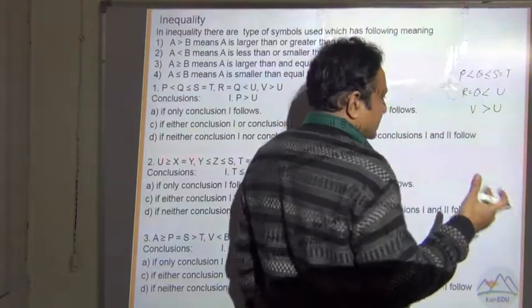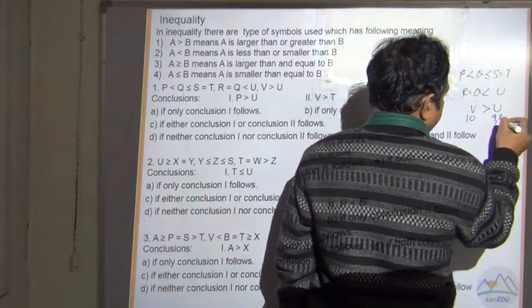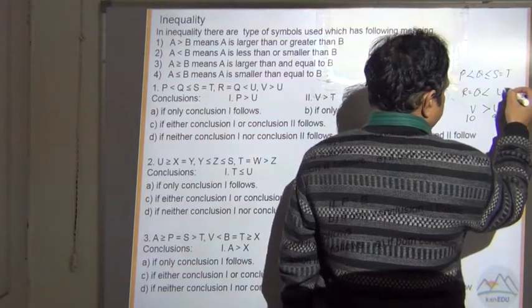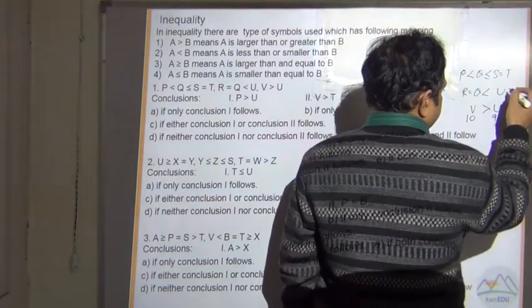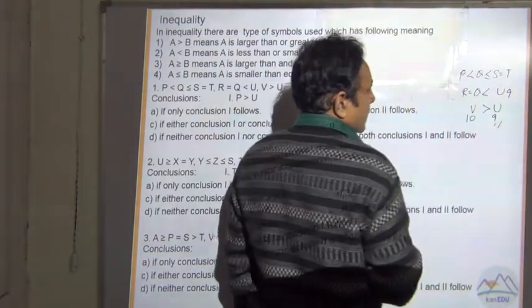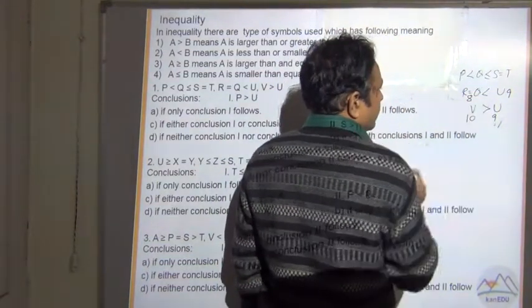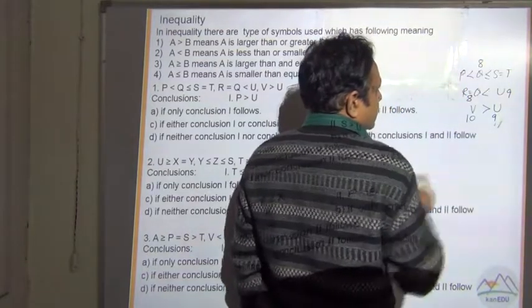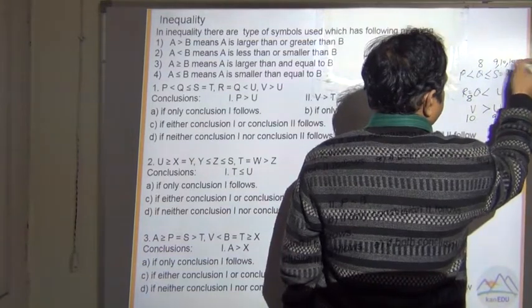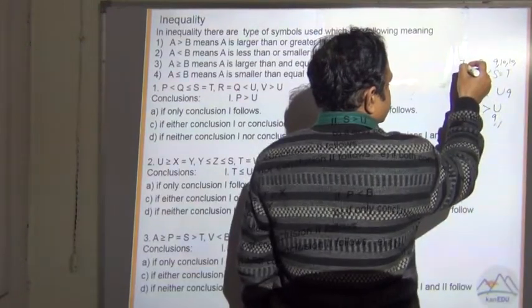Let's start with a number, say 10. So if V is 10 then U should be 9, 8, 7 — it can be any number. And if U is say 9, then R and Q, since Q is less than or equal to, should both be equal to 8. If both of them are 8, then S can be 9, 10, 11 — any number. Here P is less than that number so it should be 7.